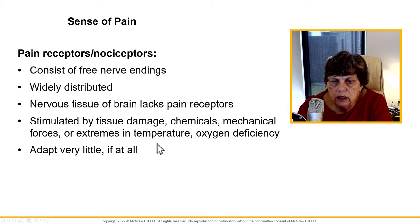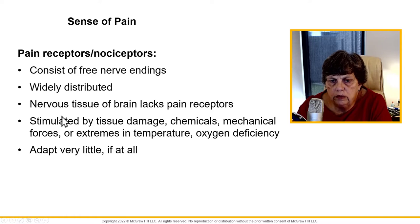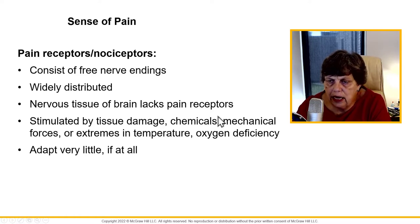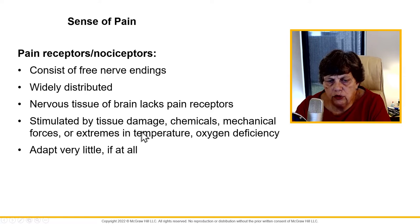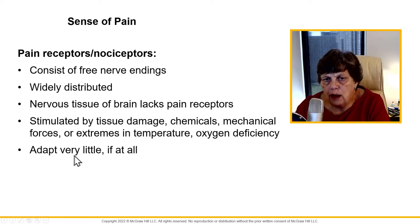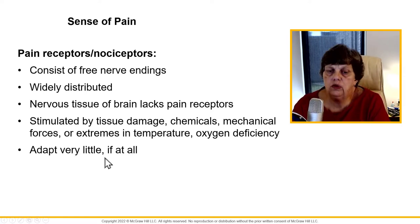Pain receptors are widely distributed, but notably nervous tissue does not have pain receptors. These are stimulated by tissue damage. Importantly, they don't adapt — which is why you can have continuous pain.